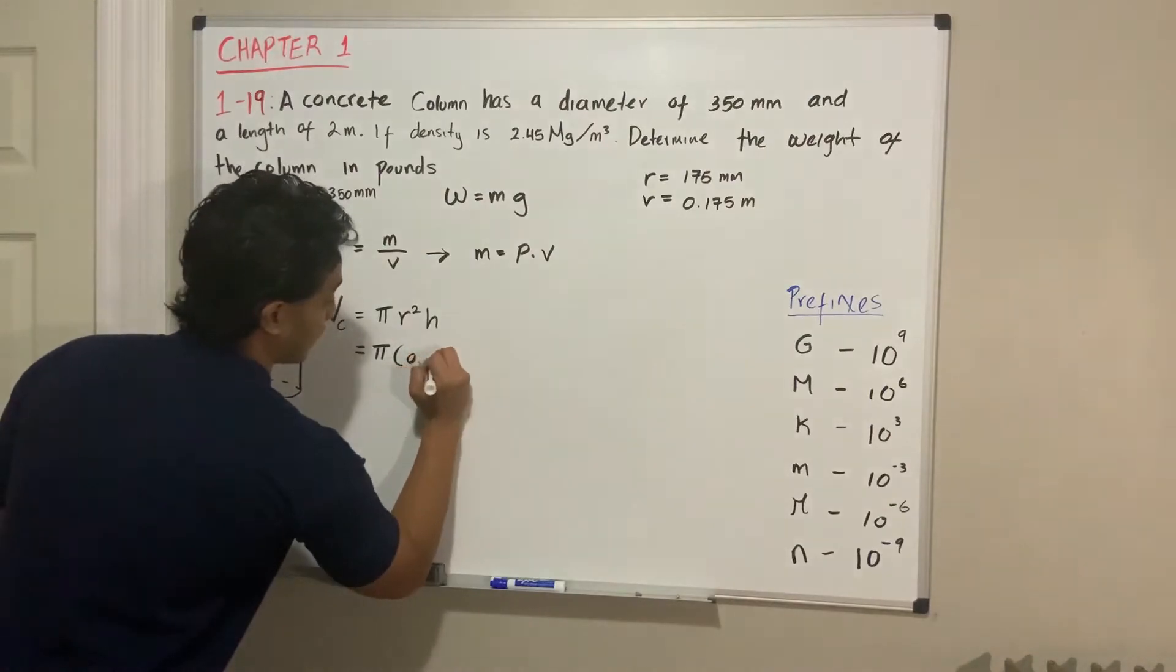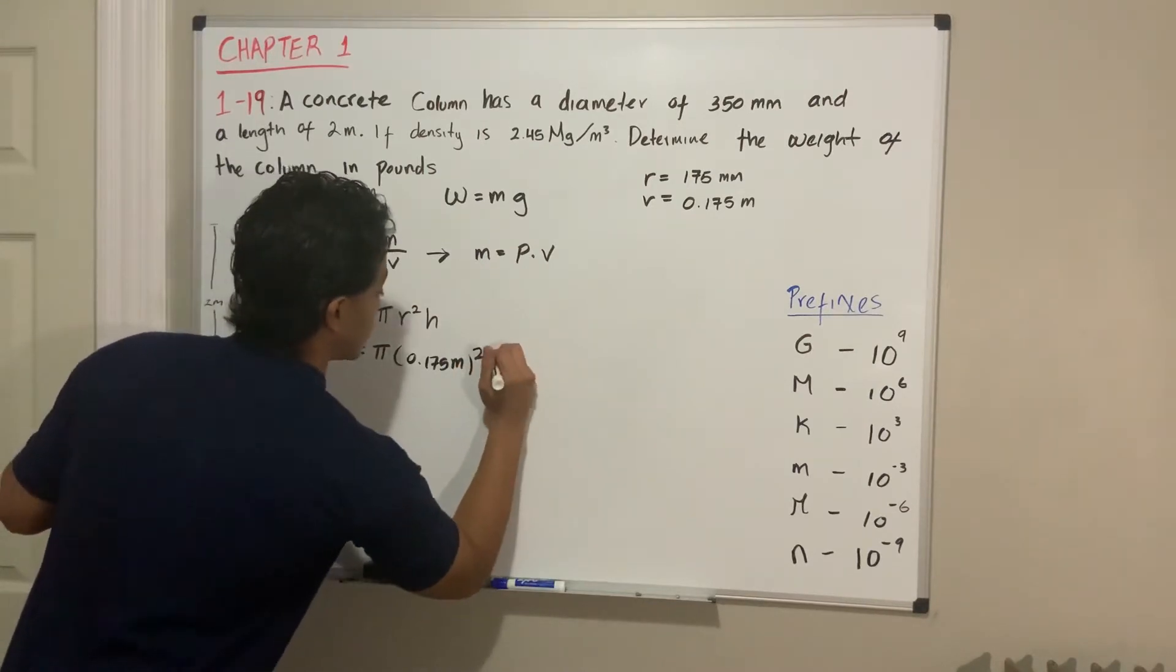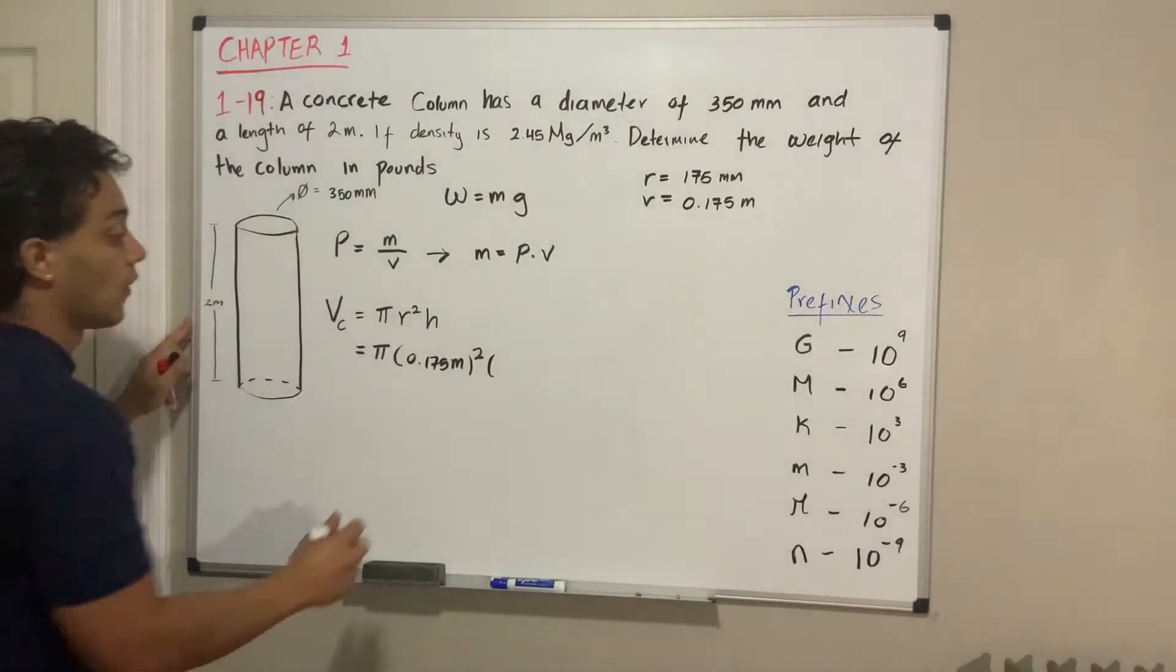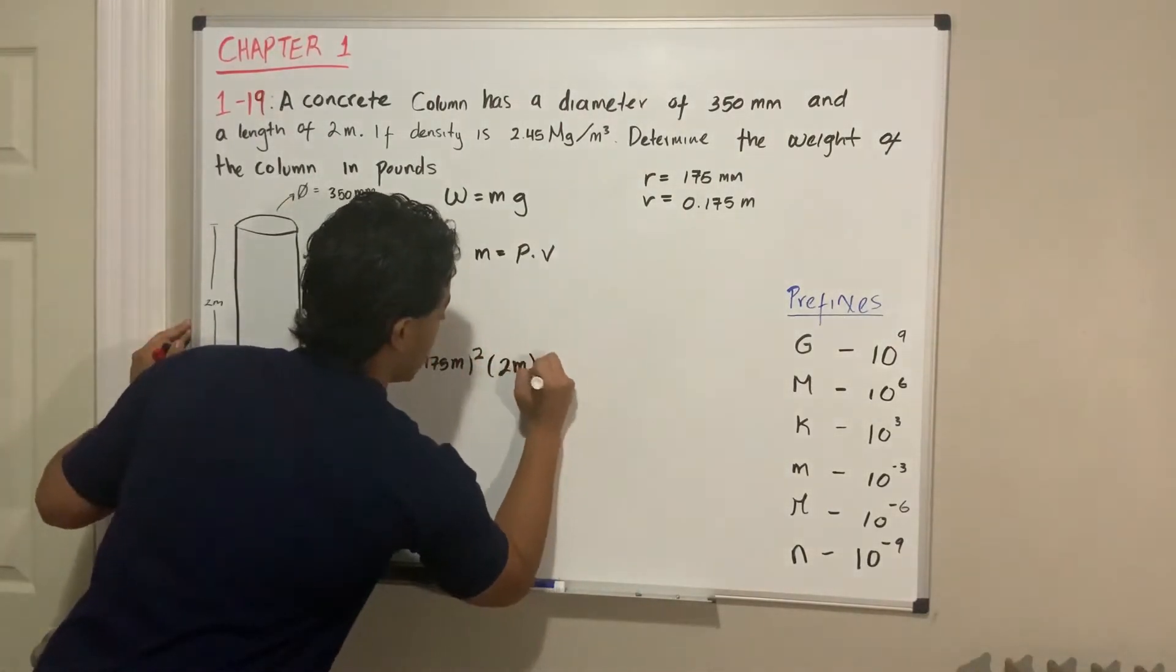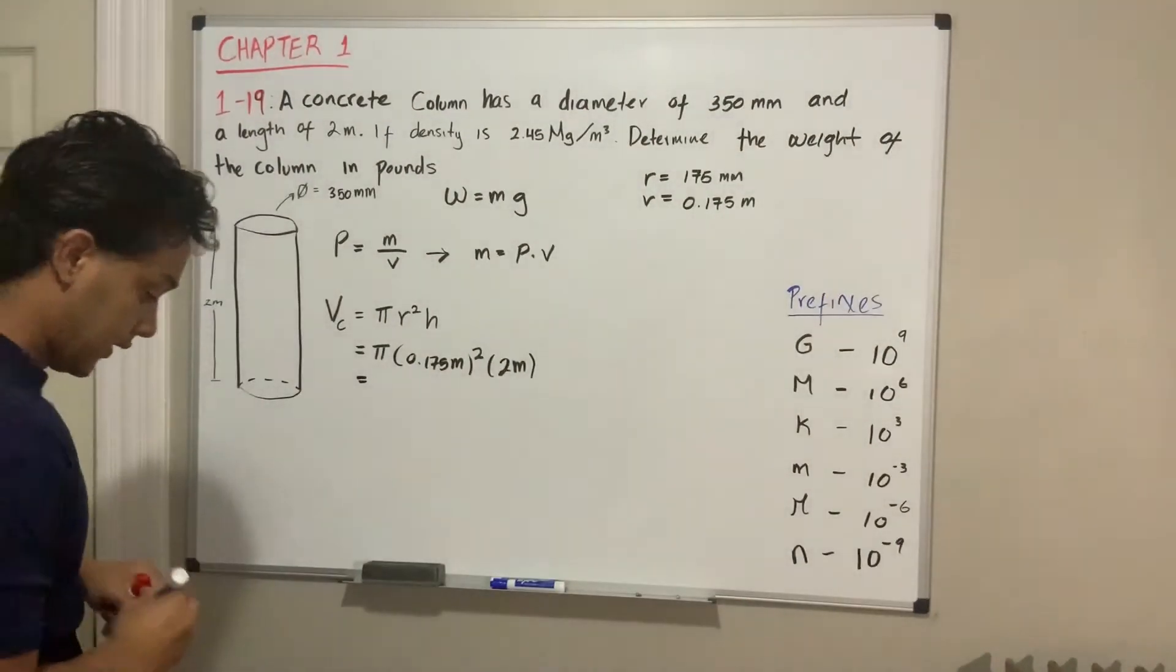So we're gonna put it over here: 0.175 meters squared, and we also need to multiply by its height. Its height is actually 2 meters, and then using our calculator we can find the value.